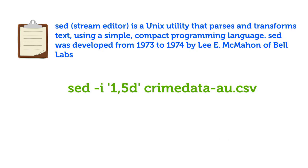However, before we show the data again, we will want to use the tool called csvkit. The first command, csvcut, cuts out the first five columns, and then pipes the output to the csvlook command.